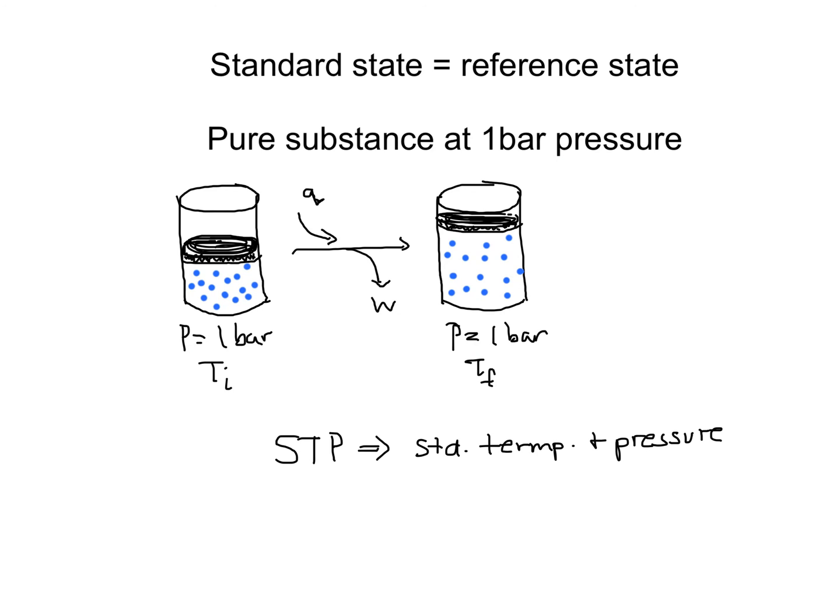When a system undergoes a change at standard state, such as the one we've described here, we use a special symbol to indicate the changes in energy, entropy, enthalpy, and so on.